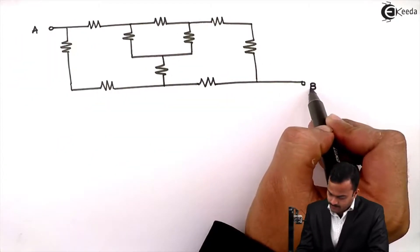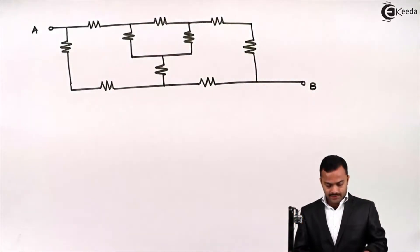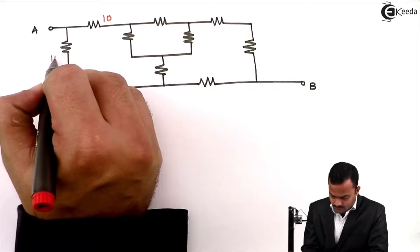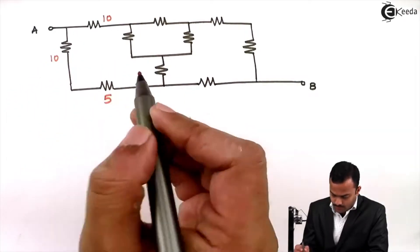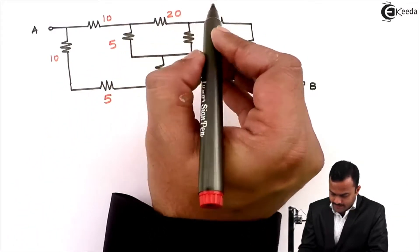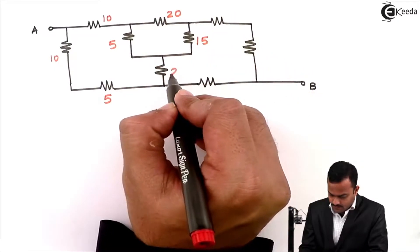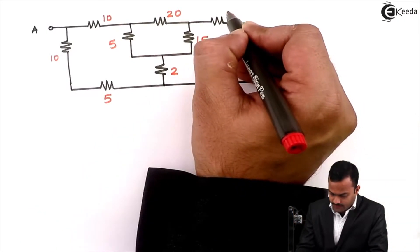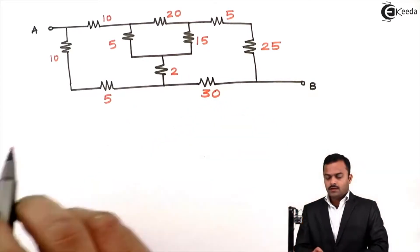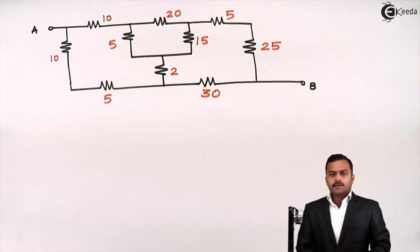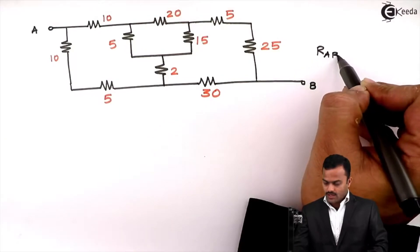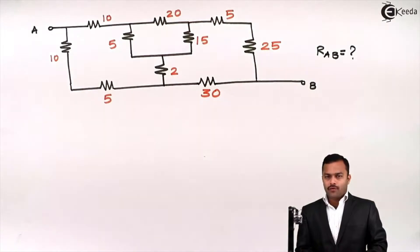These are the points A and B, and resistances are given of the values 10, this is also 10, 5 ohm, one more 5 ohm, 20, 15, this is 2 ohm, once again 5 ohm, 25 ohm and 30 ohm. We have to find out the equivalent resistance R_AB between points A and B.